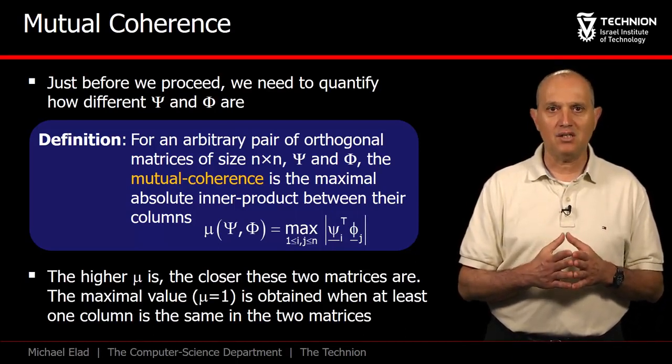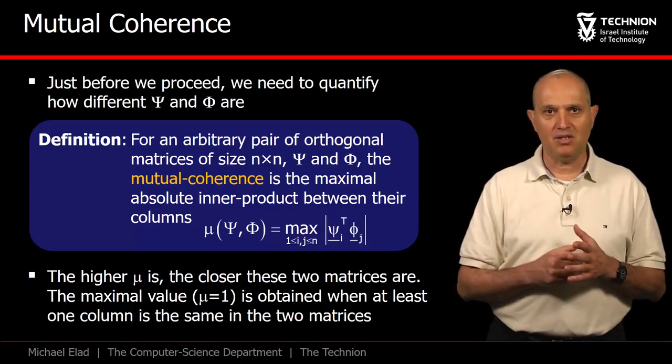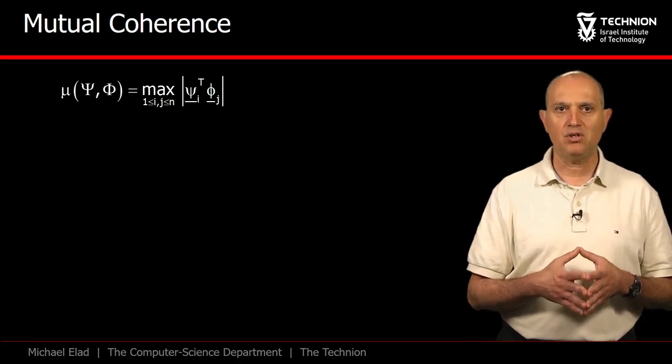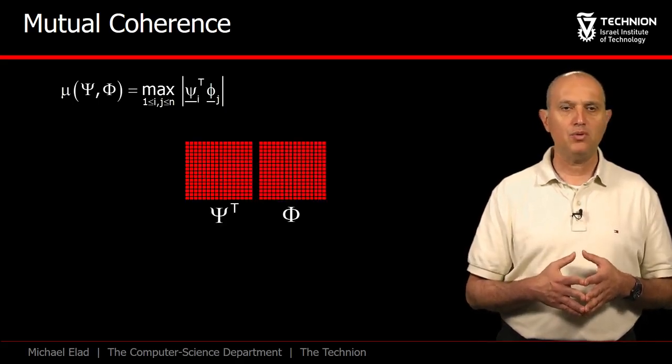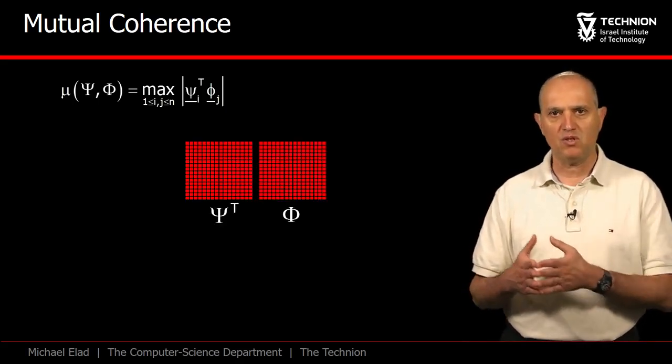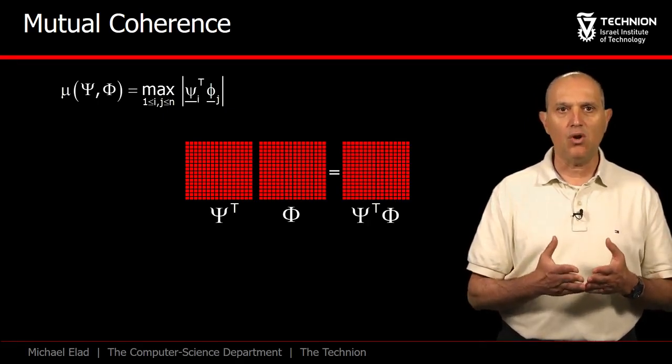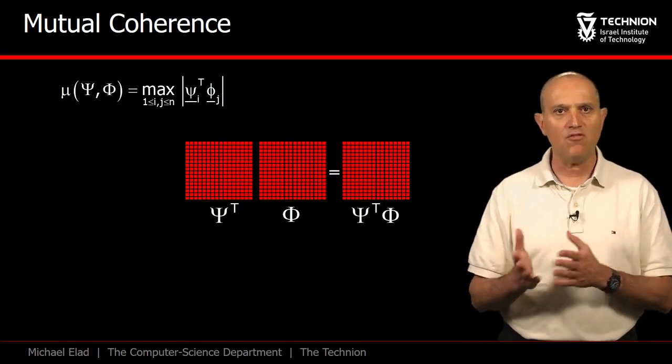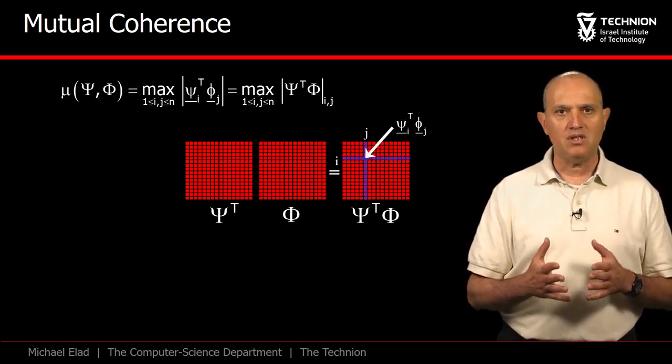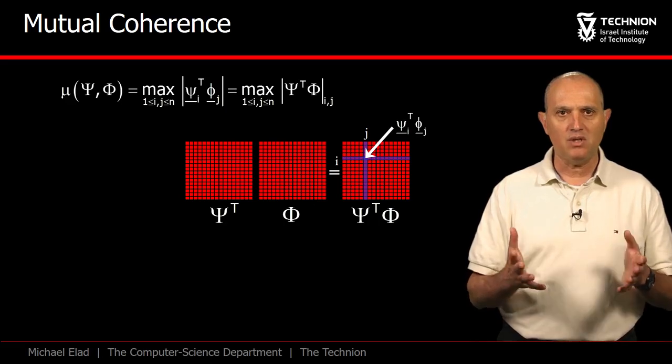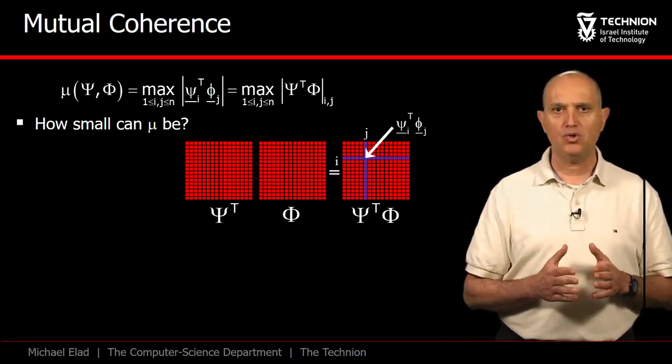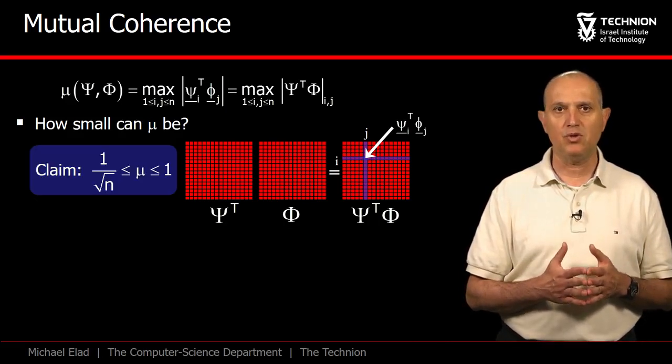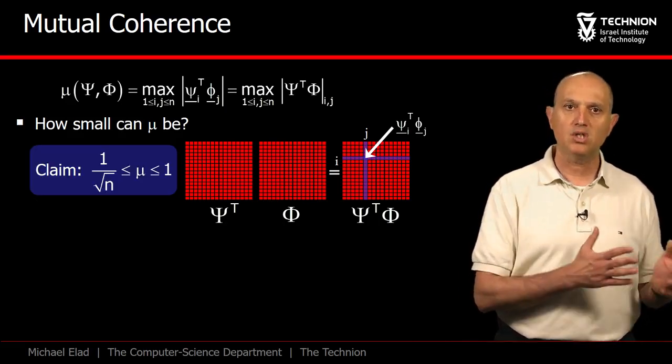An interesting question to ask is about the other extreme case. How small can mu be? In order to answer this question, let's have another interpretation of mu. Computing the multiplication psi transpose phi, we get a matrix that contains all the possible inner products of the pairs of columns taken from psi and phi. Therefore, the coherence is the maximal of the entries in this matrix after an absolute value. So, armed with this insight, it is very easy to see that the smallest possible mutual coherence is 1 over square root of n.